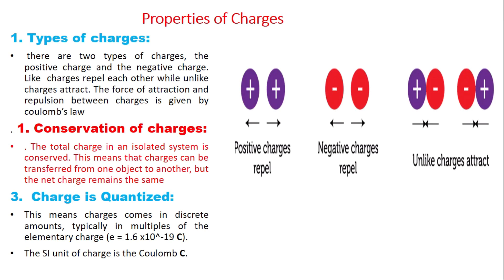The third property of charges that makes them special is that they are quantized. A charge being quantized means that charges come in discrete amounts, typically in multiples of the elementary charge. The elementary charge is that of an electron, which is 1.6 × 10⁻¹⁹ coulombs. This also tells us that the SI unit of charge is the coulomb.